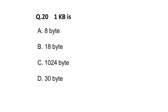The next question: one kilobyte is equal to — option A is 8 bytes, option B is 18 bytes, option C is 1024 bytes, option D is 30 bytes. The correct answer is 1024 bytes. One kilobyte is equal to 1024 bytes. Remember this, friends.